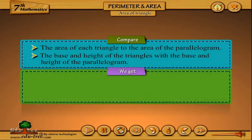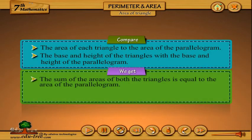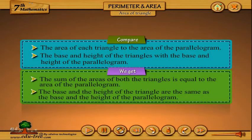We get: The sum of the areas of both the triangles is equal to the area of the parallelogram. The base and the height of the triangle are the same as the base and the height of the parallelogram.